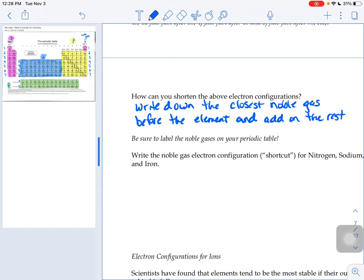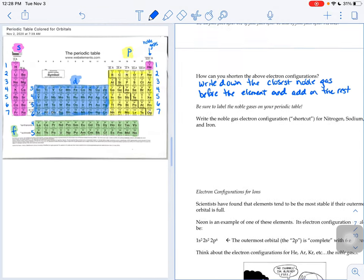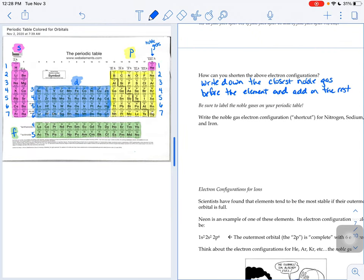What does that mean? Well, when you look at your periodic table, the noble gases we had you label last time are the column all the way to the right: helium, neon, argon, krypton, xenon, radon, those guys.